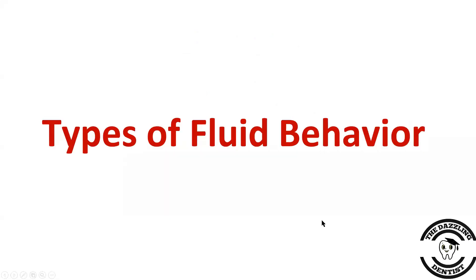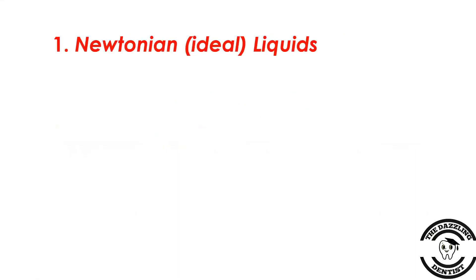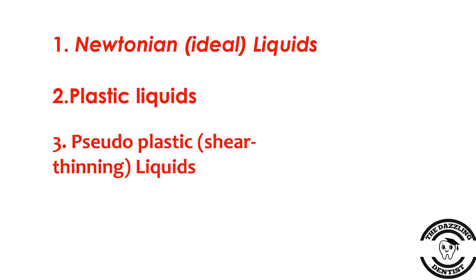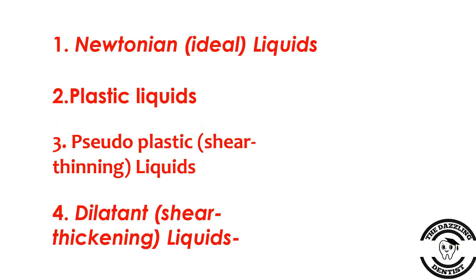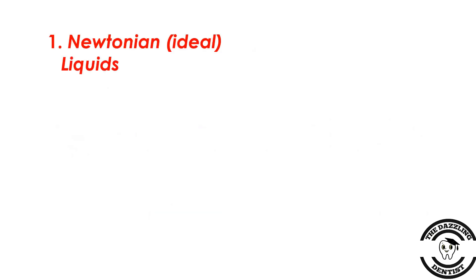Now, what are the types of fluid behavior? First is Newtonian or ideal liquids. Second is plastic liquids. Third is pseudoplastic or shear thinning liquids. And fourth is dilatant or shear thickening liquids. Let us study them in detail.